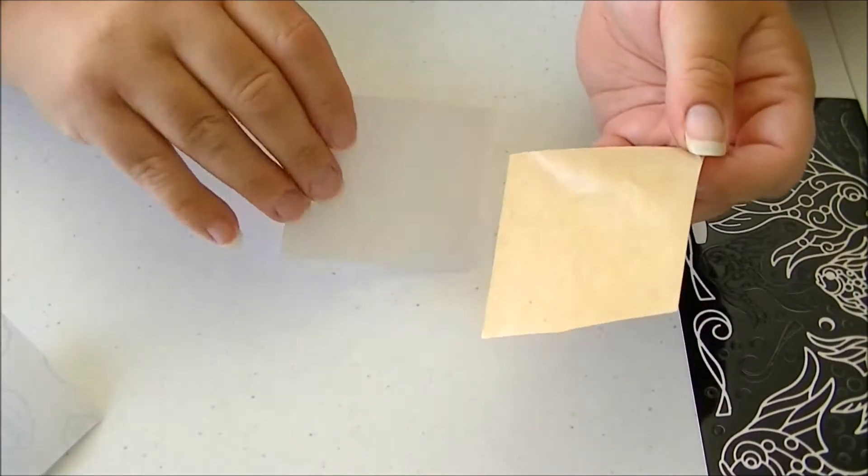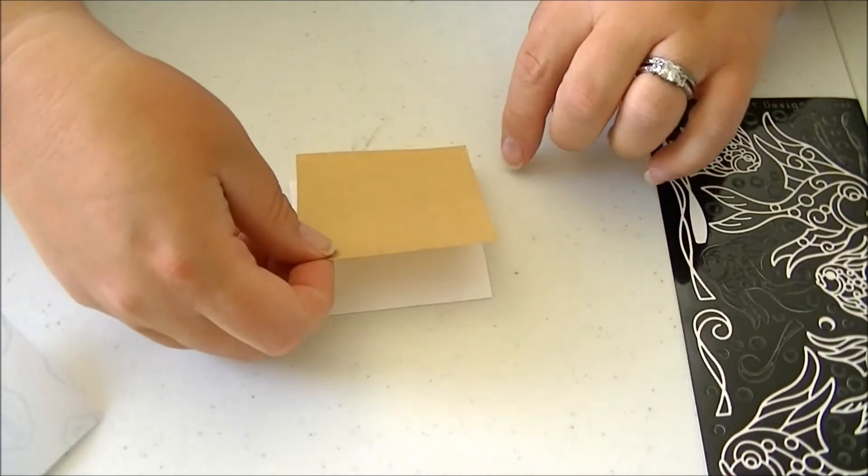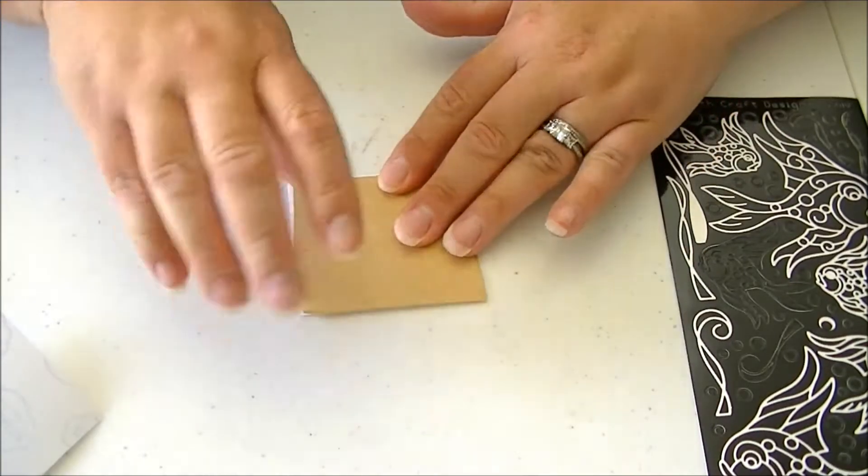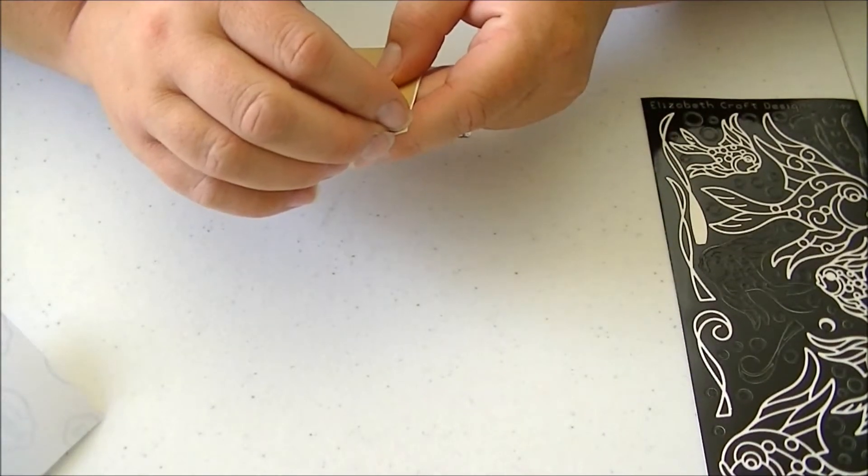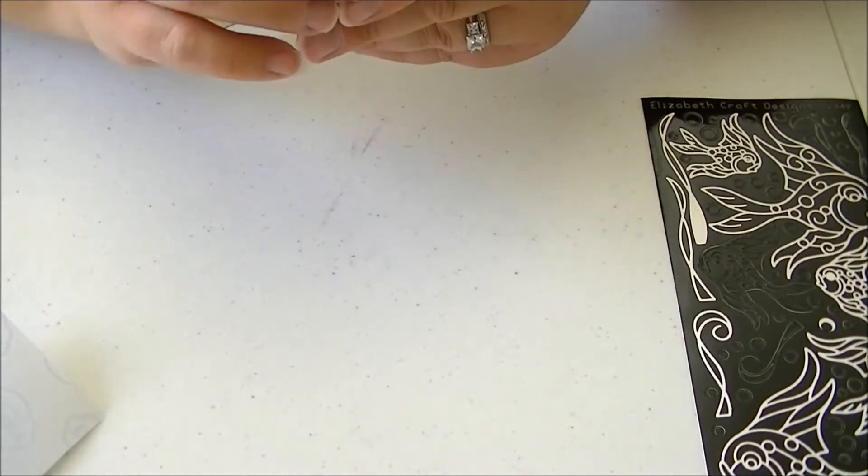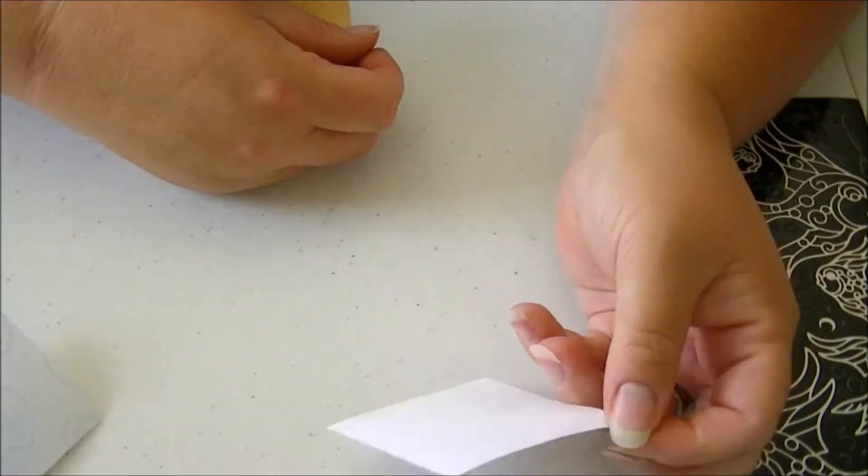What we're going to do is take the sticky side and stick it down on the cardstock, then peel it off again. Now we have a sticky piece of cardstock.